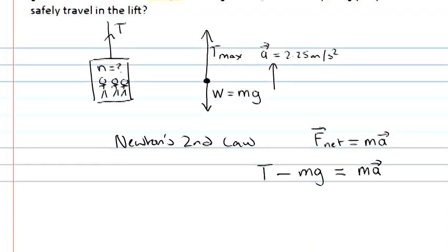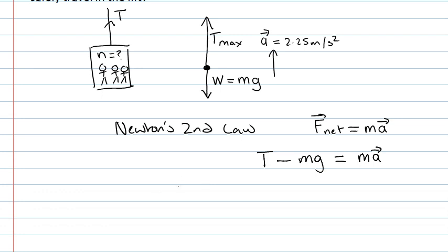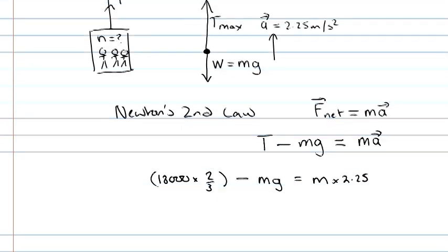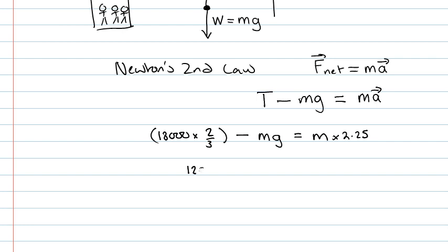So filling in the numbers, our tension, T max, was 18,000 times two thirds, so two thirds of that, minus the mass of the system times gravity, which is 9.81, but we'll leave it as g for now. And that equals the mass of the system times acceleration, which is 2.25. And so 12,000 newtons minus mg equals 2.25m.